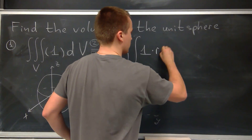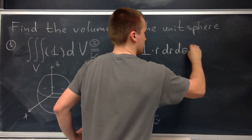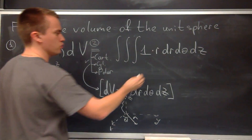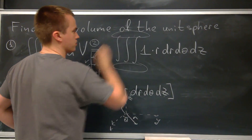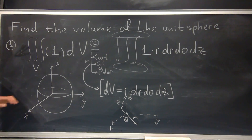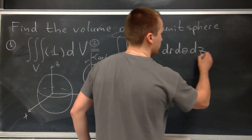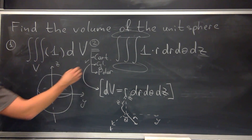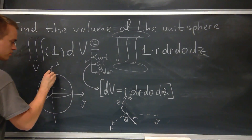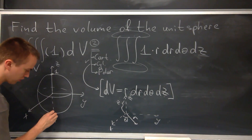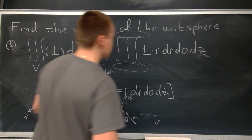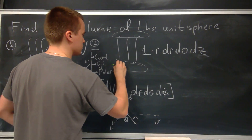After expanding dV, I get 1 times r dr dθ dz. Now the only thing we need to do is figure out our bounds for the triple integral by looking at the picture. The easiest bound to figure out is z. Since this is a unit sphere, the upper bound is positive 1 and the lower bound is negative 1, so z goes from -1 to 1.